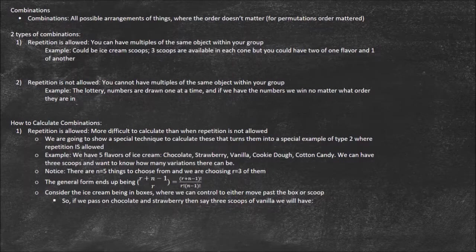Combinations are generally smaller than permutations. There are two types — the same two types we had before. The first is combinations with repetition, meaning multiples of the same object within your group.